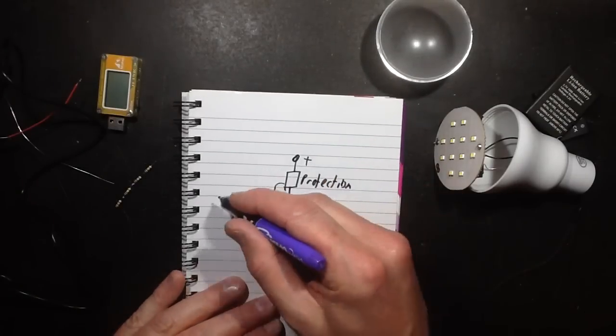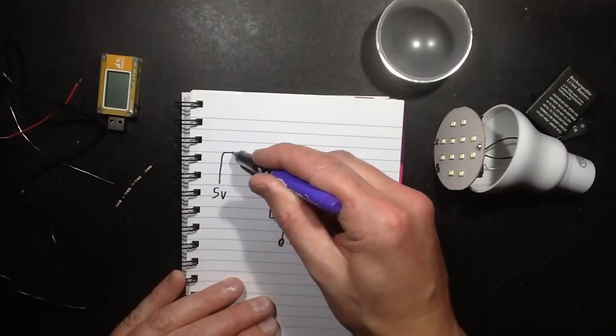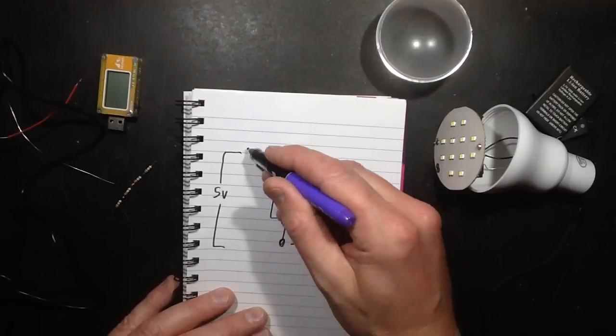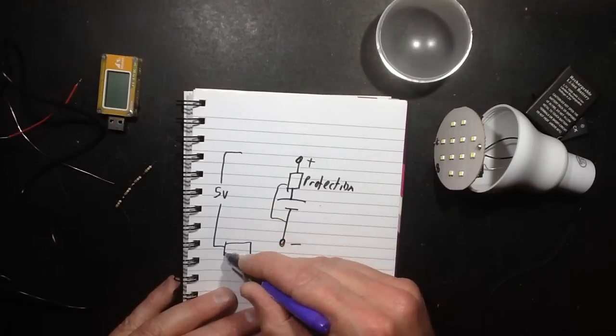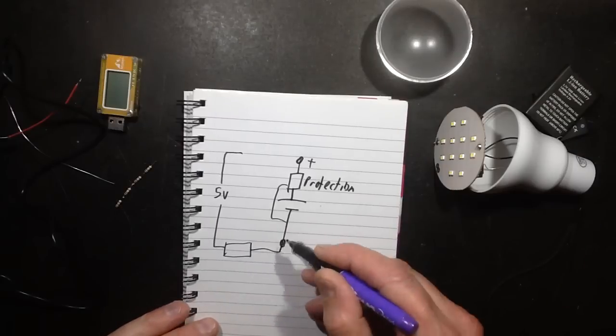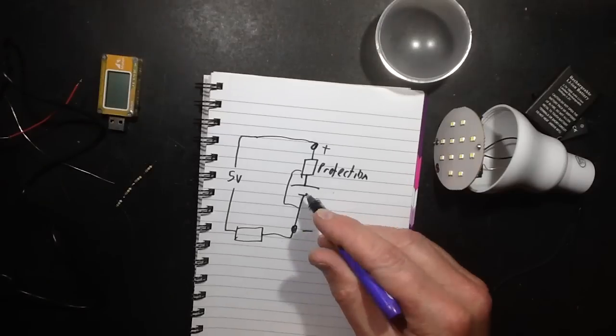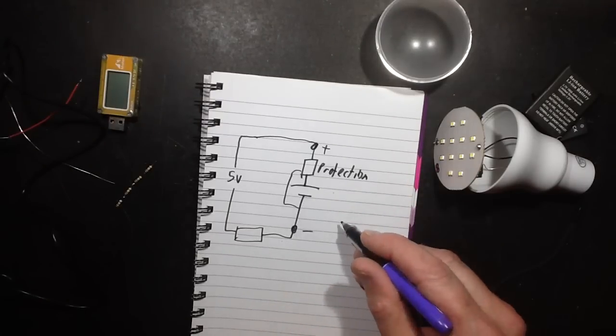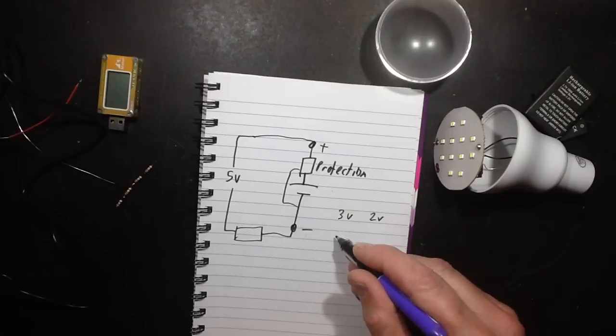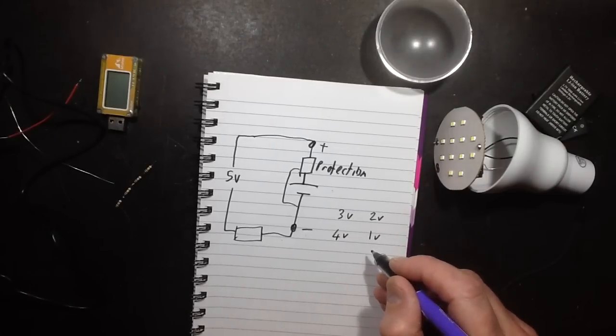I'm going to use a 5V power supply and I'm going to put a resistor, probably on the negative, it doesn't really matter if it goes on the positive or negative. The resistor value I'm going to use is 4 ohms because typically speaking this cell in its discharge state is going to be about 3V, so there's going to be 2V difference from the 5V, and in its fully charged state it's going to be close to 4V, so there's only going to be 1V difference.